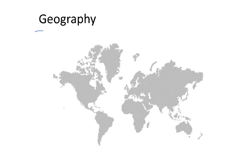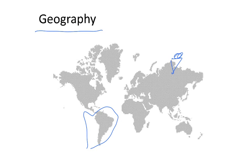This video introduces aviation geography. Geography is the science that studies the Earth. Within the Earth you can study different territories and populations. So we can say that geography is the science that combines the study of humans and territories.